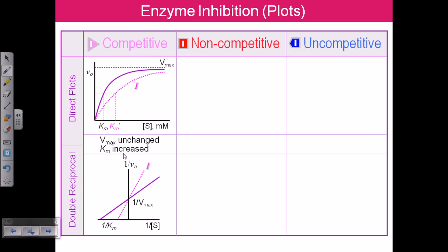Km increase means the affinity is decreased, because Km is inversely proportional to affinity. So Km increase means the affinity of the enzyme towards the substrate is decreased. We'll focus on the direct plots because they help us understand things more easily and quickly.